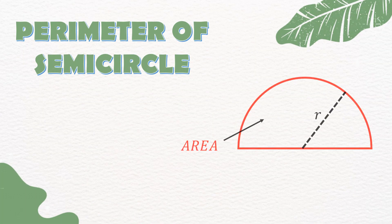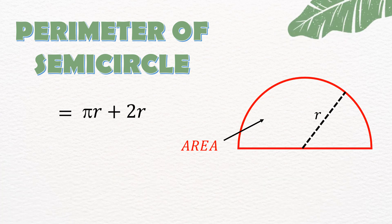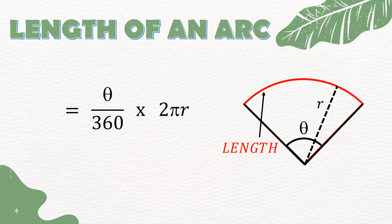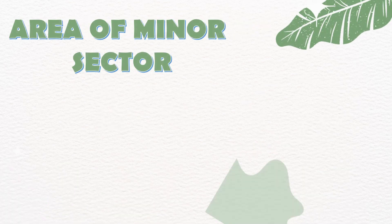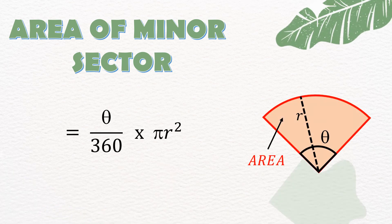Perimeter of semicircle is equal to πr + 2r. Length of an arc is equal to (θ/360) × 2πr. Area of minor sector is equal to (θ/360) × πr².